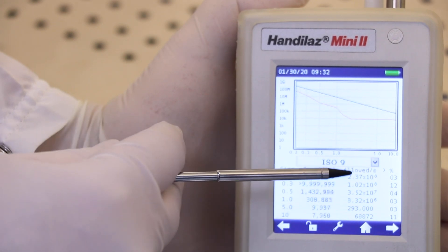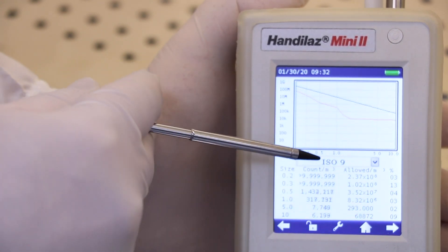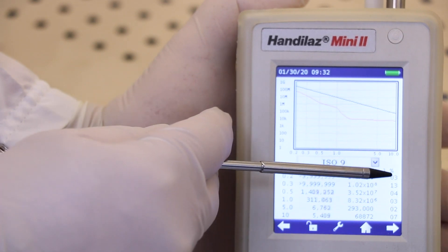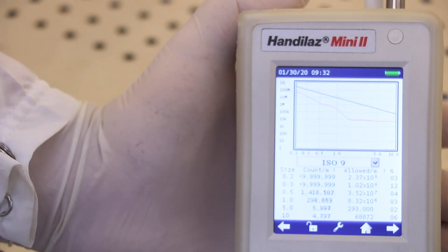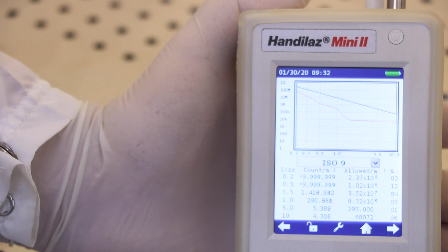The column to the right is the threshold count level per particle size, and the rightmost column is the resulting percentage of this threshold. If the number exceeds 100%, then we don't meet the requirements for the selected class.